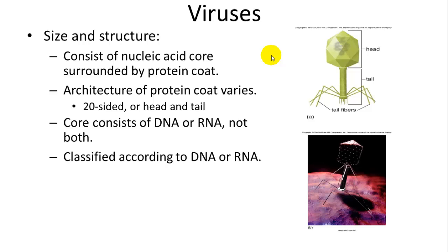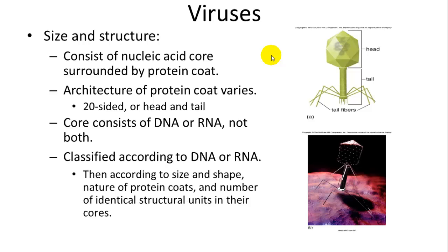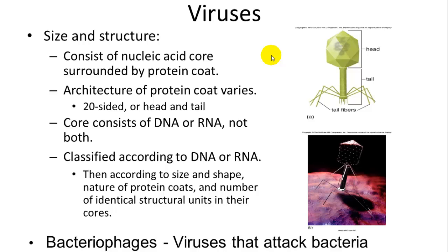Viruses can be classified according to whether they have DNA or RNA, and whether they are single- or double-stranded. They can also be classified by size, shape, nature of their proteins, number of identical structures, and what they infect. A bacteriophage, for example, is something that affects bacteria.